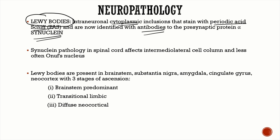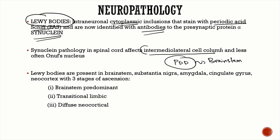Lewy bodies are present in the spinal cord, brain stem, amygdala, cingulate gyrus, and eventually the neocortex. In Parkinson's disease dementia the Lewy bodies are restricted to the brain stem, whereas in Lewy body dementia they are more widely spread. In the spinal cord, Lewy bodies are predominantly in the intermediolateral cell column and to some degree in the Onuf's nucleus.